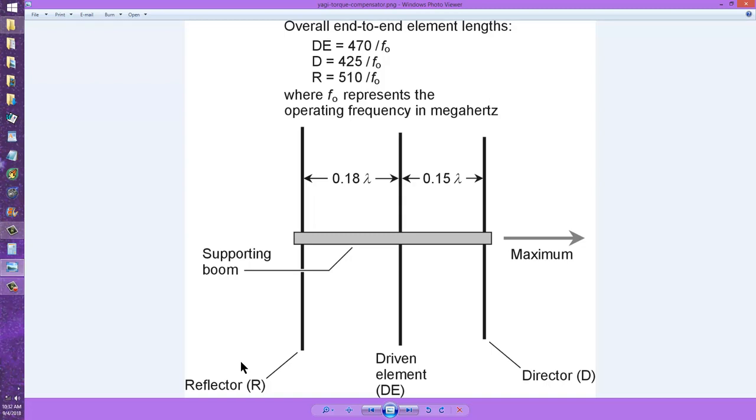...that a torque compensator is usually a metal plate or sometimes a dummy element, an additional element that you can add to the antenna made out of fiberglass instead of metal. So it will not actually do anything electrically with respect to the antenna, but it will produce wind load.